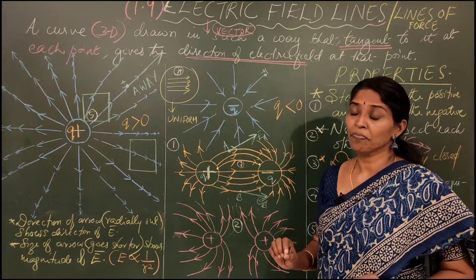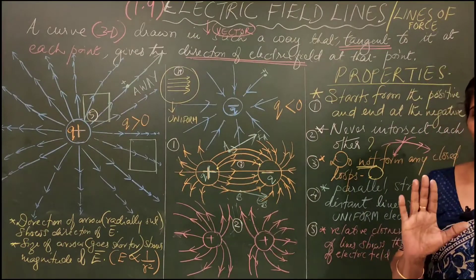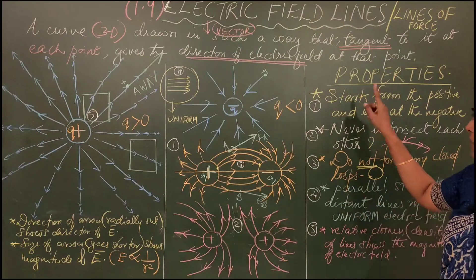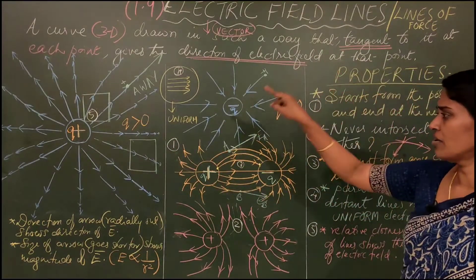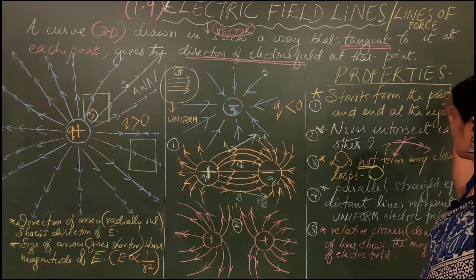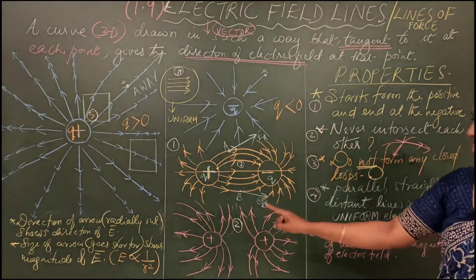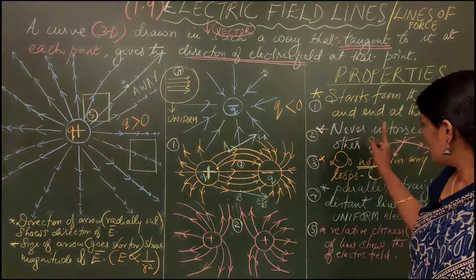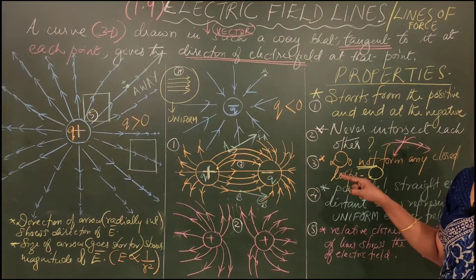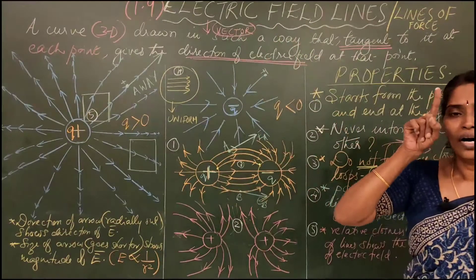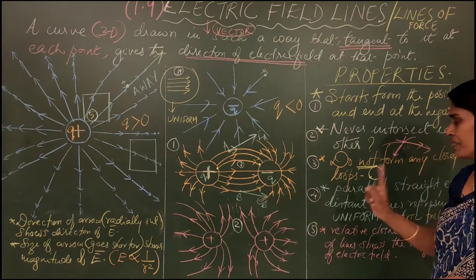Now for the main properties — here are five key points. Property 1: electric field lines start from positive charges and end at negative charges. Property 2: they never intersect each other, because at any point the electric field has only one direction, and intersection would imply two directions at the same point. Property 3: electric field lines never form a closed loop.